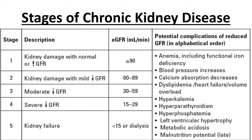When GFR falls below 120 but remains above 90, it is called stage 1 chronic kidney disease. Previously it was called chronic renal failure, but it is now called chronic kidney disease, because the term renal failure or kidney failure is now dedicated for stage 5 CKD. In stage 1, there is kidney damage with normal or increased GFR — 90 or more, or possibly more than 120.